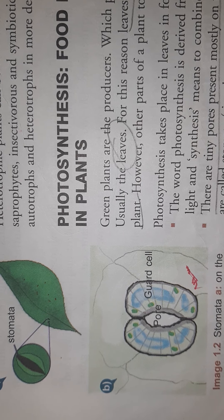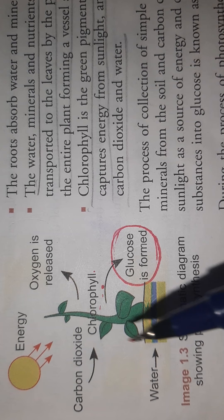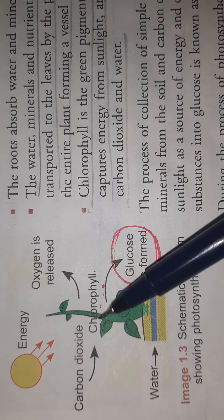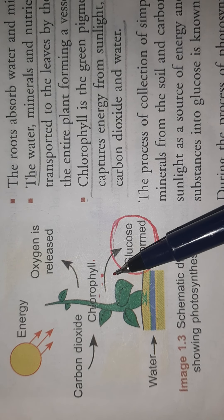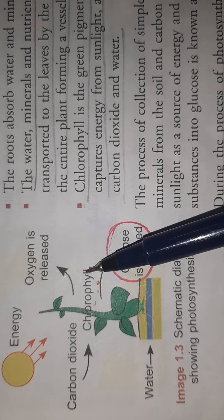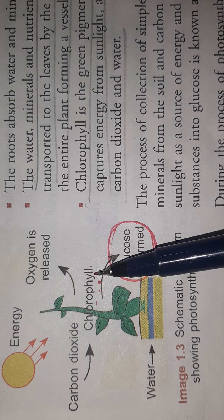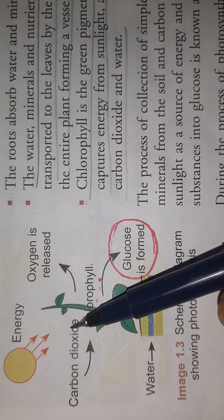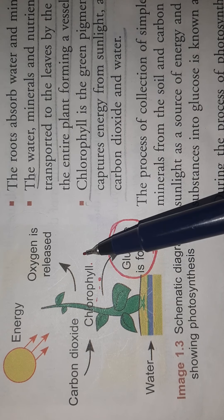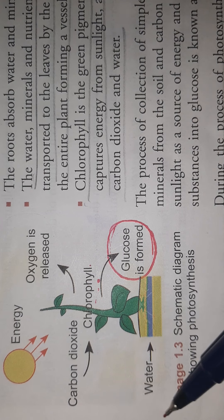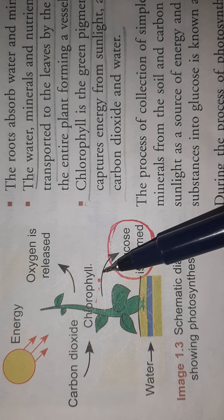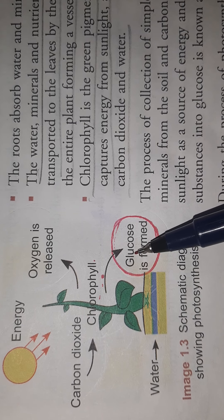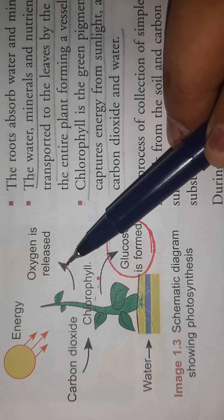Now, what is photosynthesis? This is a green plant — it is green because it has chlorophyll in it. The green color pigment present in plants which makes the leaves green is known as chlorophyll. This plant takes water from the roots, carbon dioxide from the atmosphere, and sunlight from the sun. Chlorophyll is already present. By using all these, the plant produces food — they manufacture glucose. And with this, oxygen is also released.